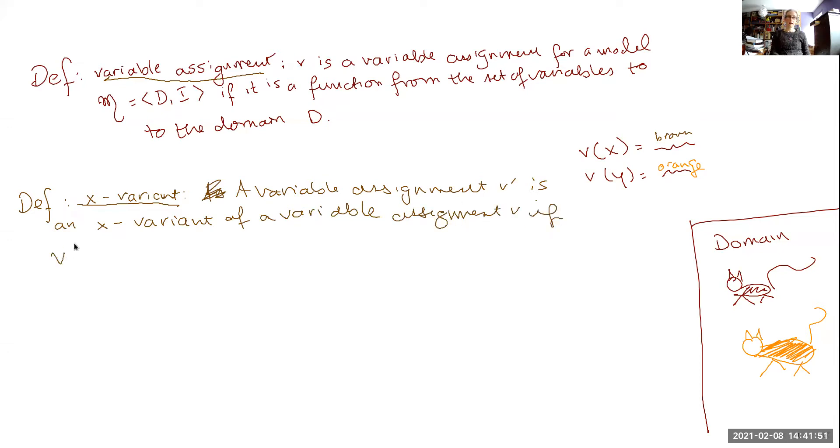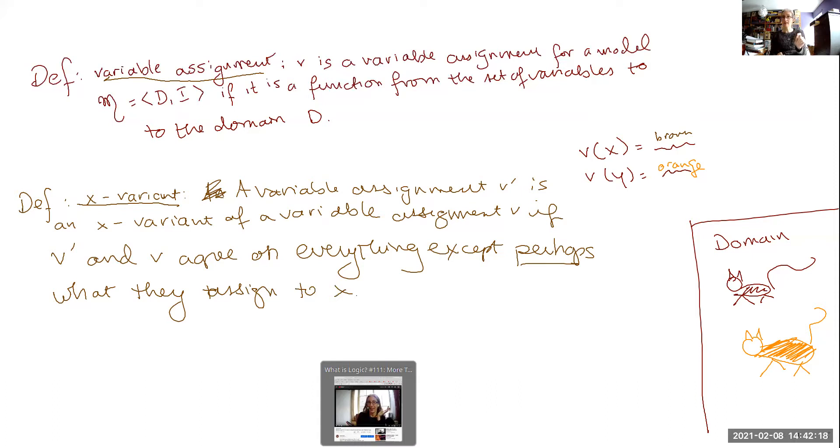If v prime and v agree on everything, so what they assign to all of the variables is the same, except perhaps what they assign to variable x.